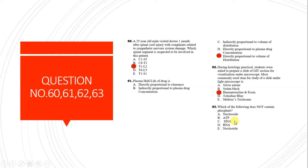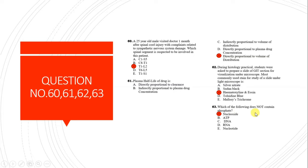Question 63: Which of the following does not contain phosphate - nucleoside, ATP, DNA, or any nucleotide? Nucleoside does not contain phosphate. It is formed by pentose sugar (ribose or deoxyribose) plus a nitrogenous base with no phosphate. When phosphate is attached to a nucleoside, it forms a nucleotide.